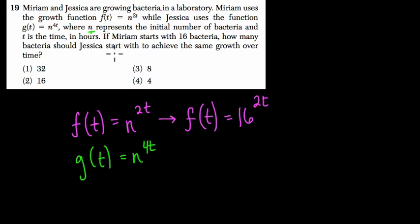How many bacteria should Jessica start with to achieve the same growth over time? So the question is asking, basically, what n value should Jessica use so that these two things actually grow at the same rate? So first of all, even if you're not sure what this question is asking...